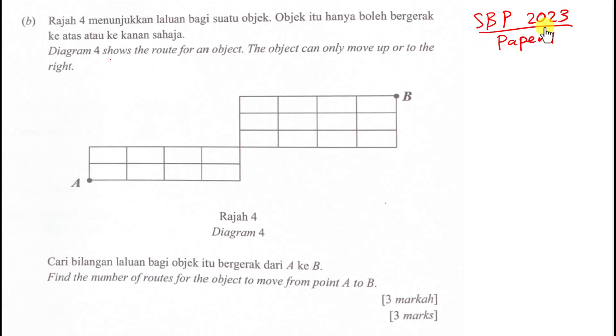All right, let's have a look at this SPP 2023 Paper 1. I think this is a question for permutation and combination. So this is just a three mark question. But a lot of students ask me about this question and feedback to me even they have the marking scheme, but they still don't understand it. So I decided to make a short video to explain about this.